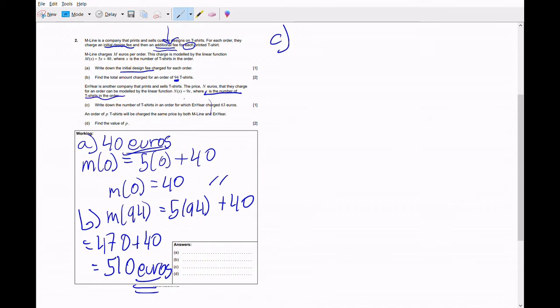So immediately, since we're trying to find the number of t-shirts, we're gonna know that x is a variable. In part B for example, x was not a variable. They gave us the value of x and then we had to find the total amount charged for an x of 94.